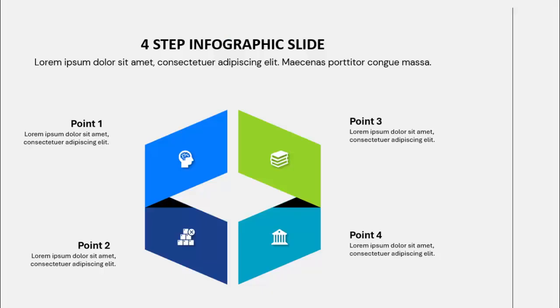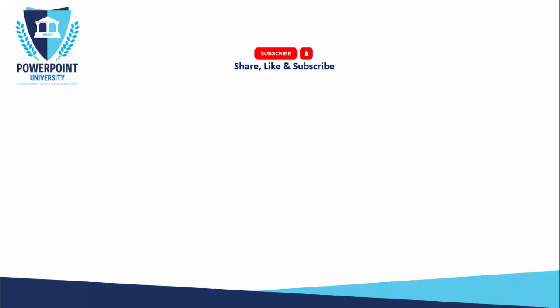In today's tutorial I'm going to show you how to create this four-steps infographic slide in PowerPoint. As you can see, I've added four different colors and for each step I've added icons. You can add the point number and some detailed text — likewise for points two, three, and four.